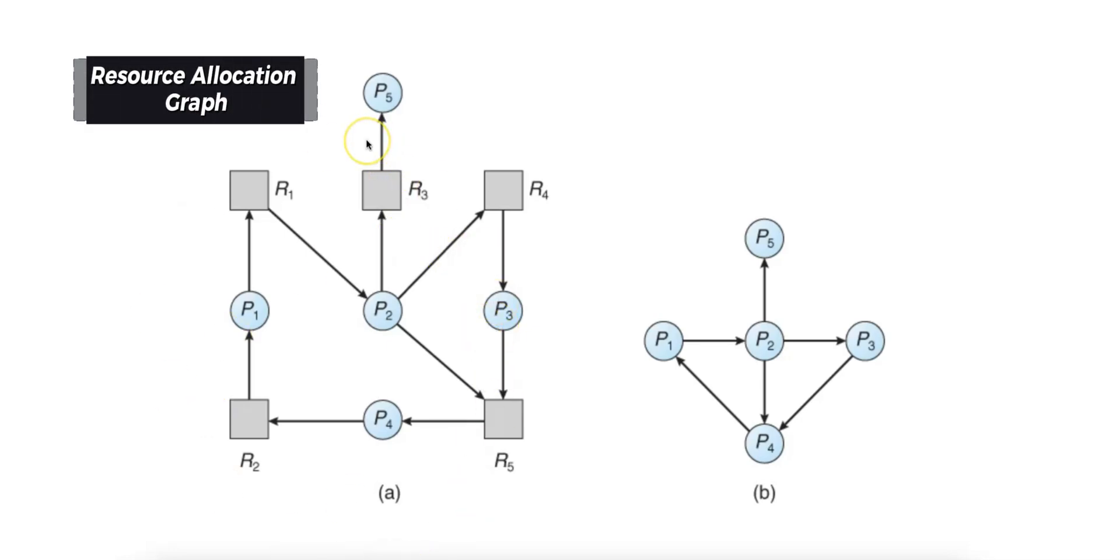The resource allocation graph is a graphical representation used to illustrate the allocation of resources to processes and their requests for additional resources. This graph provides a clear visualization of the current state of resources in a system, facilitating the identification of potential deadlocks.